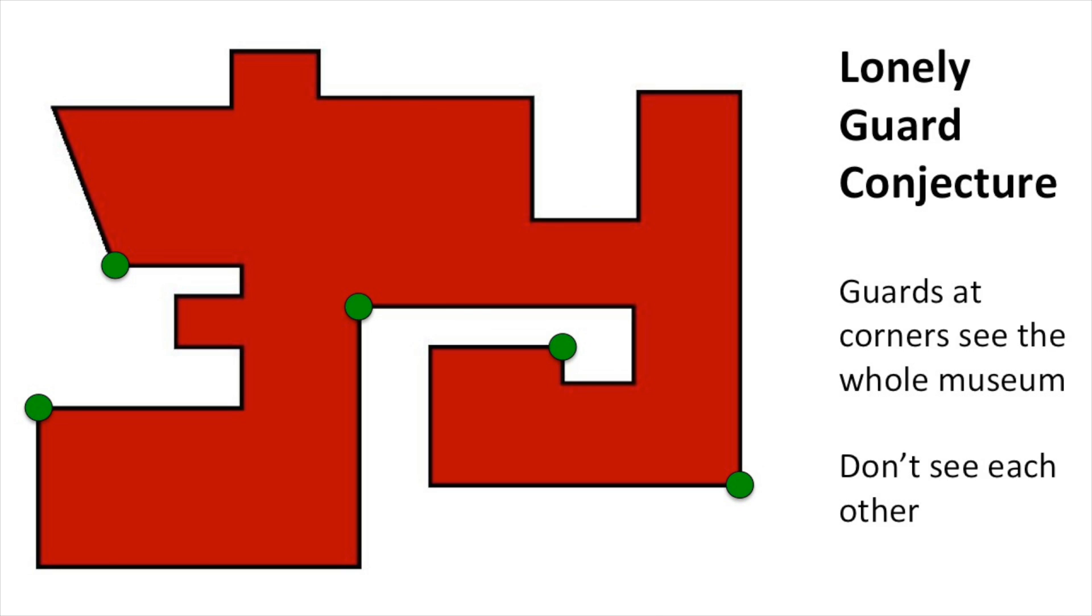This inspires what I will call the lonely guard conjecture. Is it always possible to place the guards at corners to see the whole museum, but no guard sees another? Think about it.